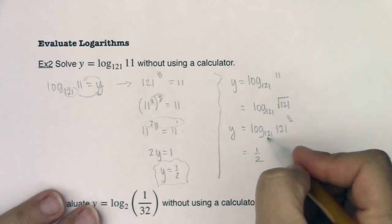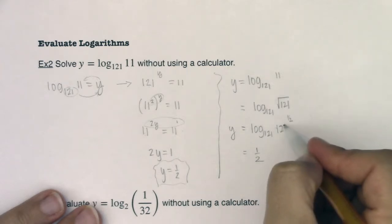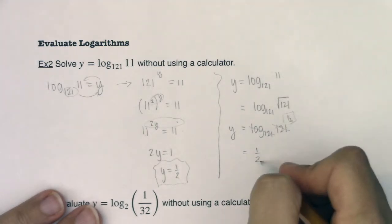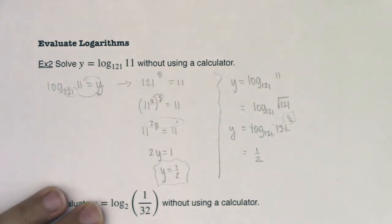When the base of your logarithm is the same as the base of your power, the only thing that makes it out of there is the exponent. You can think of these as canceling out, and then the 1 half survives.